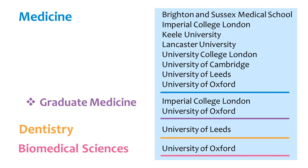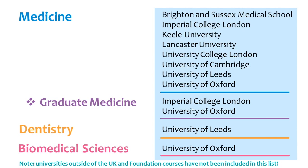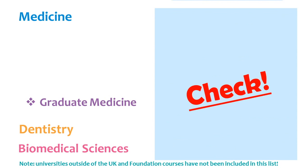As of June 2017, these are the main courses and universities in the UK which require this test, but this list can change from year to year. The test is also required for some international universities as well as some foundation courses, so make sure you check whether the universities and courses you're considering require the BMAT before you apply. This information can usually be found on the particular university's website alongside their other entry requirements, or on the BMAT website itself.